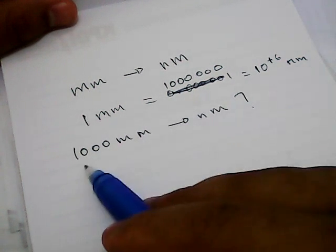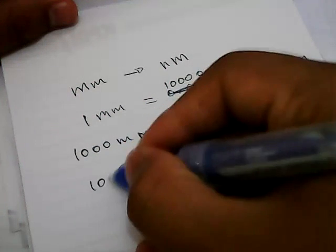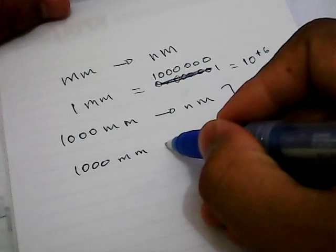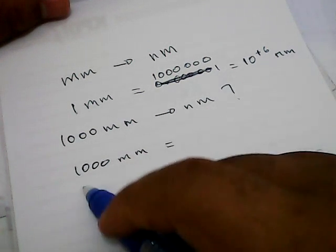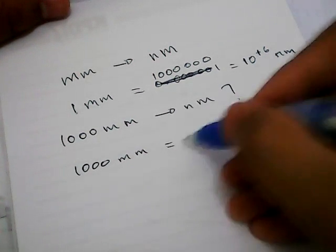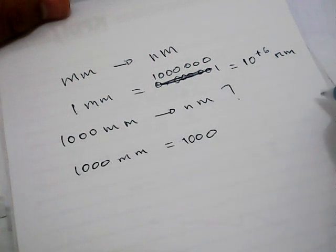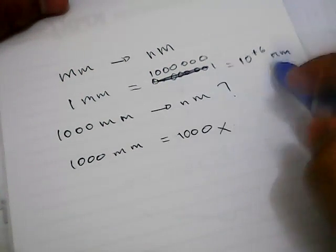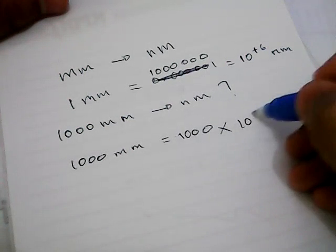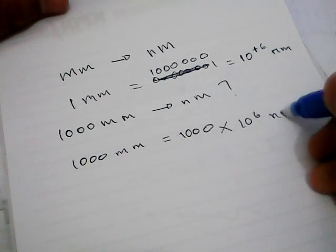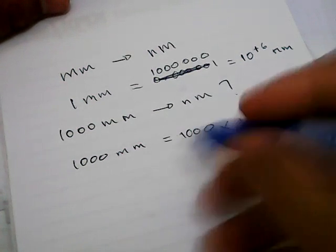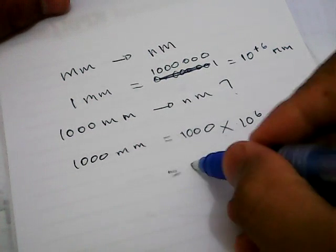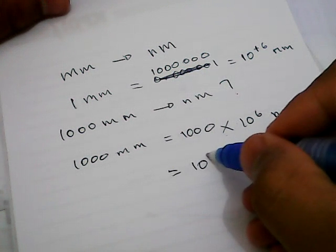Let's solve this problem. The first thing you need to do is write down this number again: 1,000 millimeters. It's equal to 1,000, and you need to multiply this 1,000 with 10 power 6 nanometers. 1,000 is equal to 10 power 3.